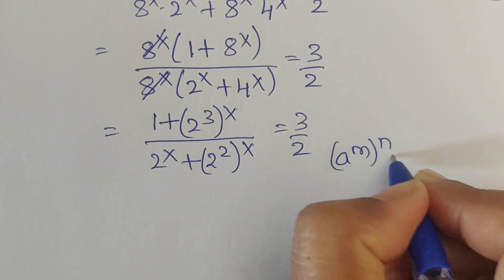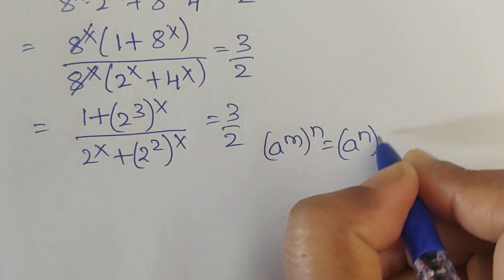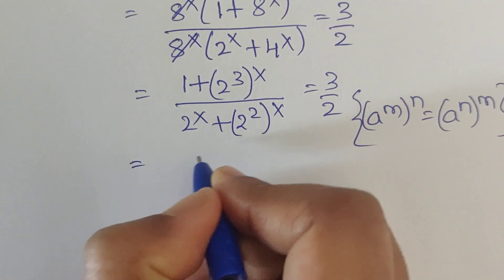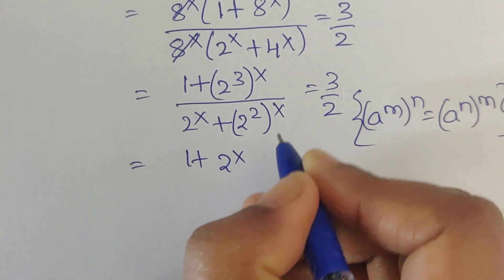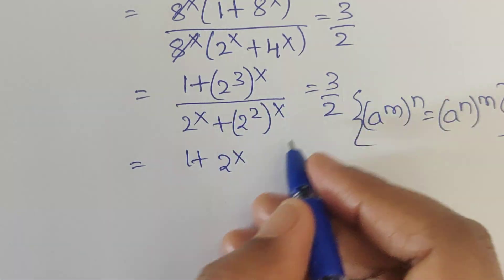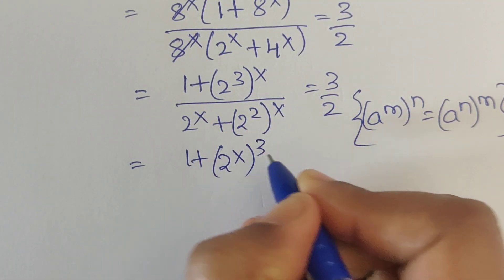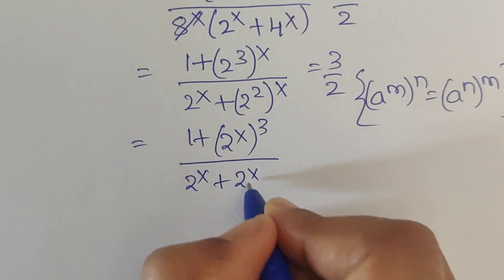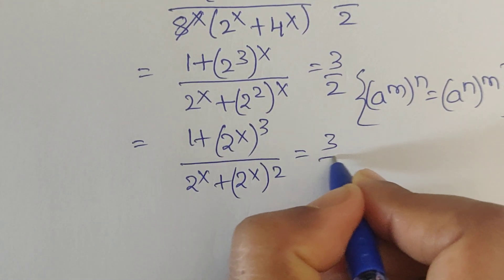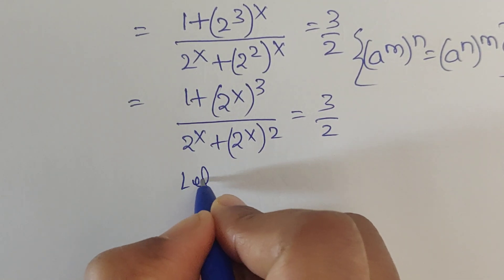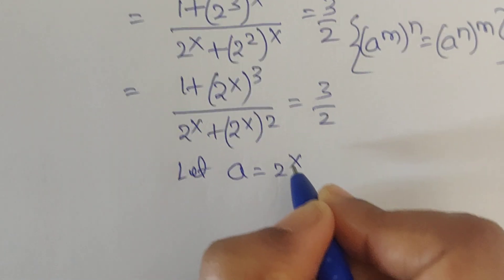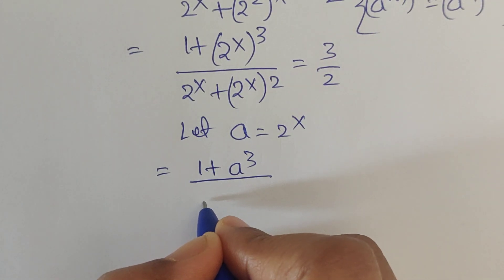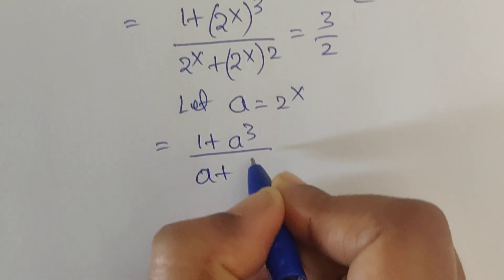We apply the formula a^m whole to the power n equals a^(mn). Using this formula, we can write 1 plus 2^(3x) in the numerator divided by 2^x plus 2^(2x) in the denominator, equals 3/2. Now let us consider a = 2^x. So it becomes 1 plus a cubed divided by a plus a squared, equals 3/2.